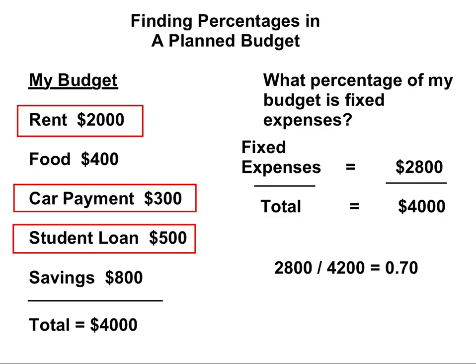We find that $2,800 divided by $4,000 is equal to 0.70. This is the fractional amount of your budget which is fixed expenses, but not the percentage. To find the percentage, we find this fractional amount, 0.70, of 100. That equals 70. So, 70% of the budget is fixed expenses.